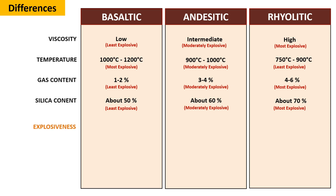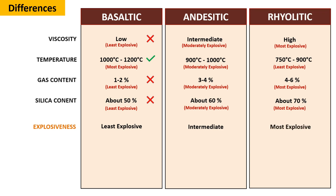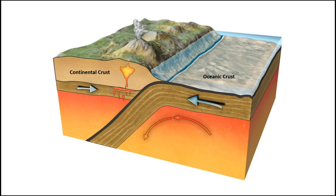Explosiveness: In general, even though basaltic magma has a higher temperature, its lower viscosity, gas content, and silica content make it the least explosive compared to andesitic and rhyolitic magmas. On the other hand, the explosiveness of andesitic magma is intermediate between basaltic and rhyolitic magma. Finally, rhyolitic magma is the most explosive due to its higher viscosity, gas content, and silica content.